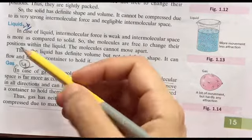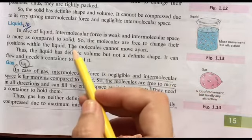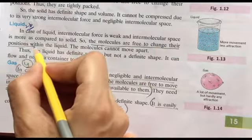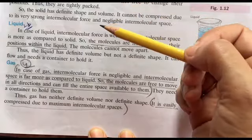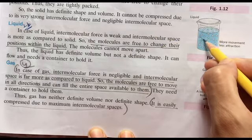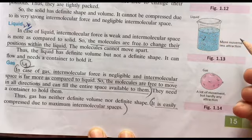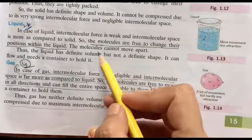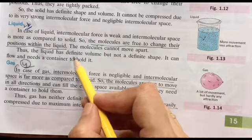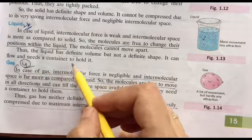In case of liquids, the intermolecular force is weak as compared to solids and space is a little more as compared to solid. And this property is very important: the molecules are free to change their position within the liquid. In the case of solids, the position is fixed and they will remain packed there. But in the case of liquid, molecules can change their position. One molecule can go here or there. Inside the liquid they can change their position, they cannot go outside, only inside. That's why they flow. Liquids flow because the molecules are free to change their position within the liquid. And they have a fixed volume but not a fixed shape. That's why they flow and need a container to hold.